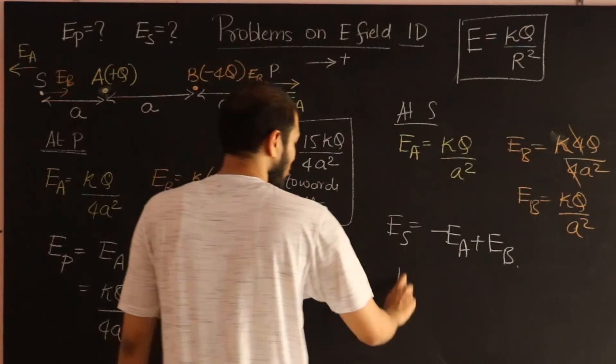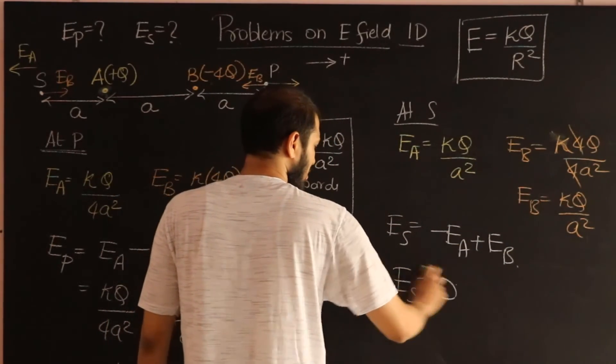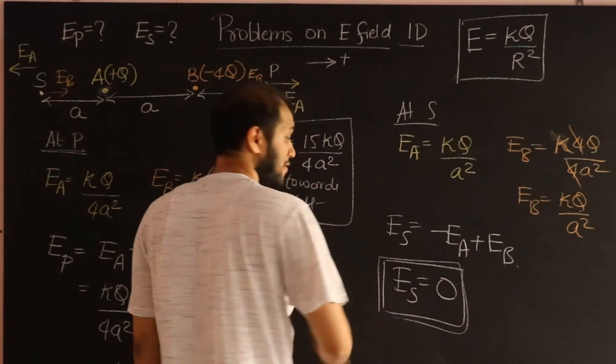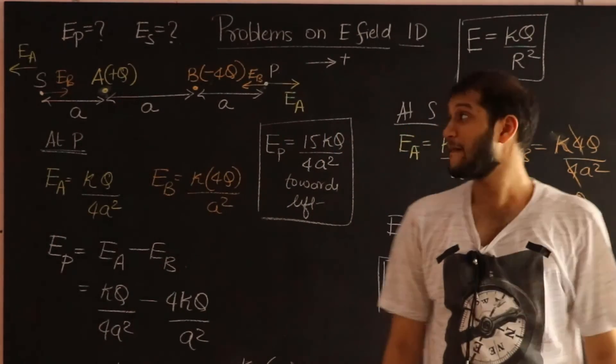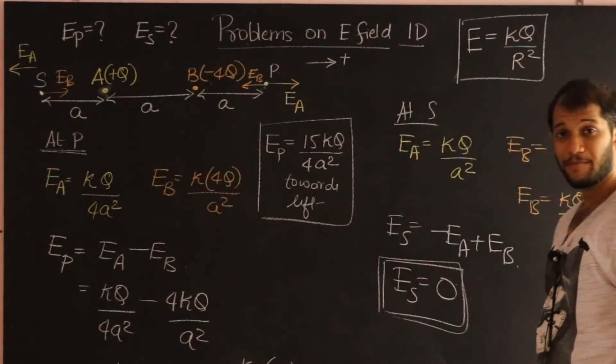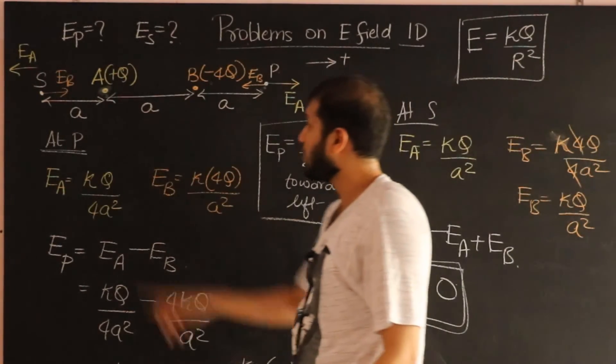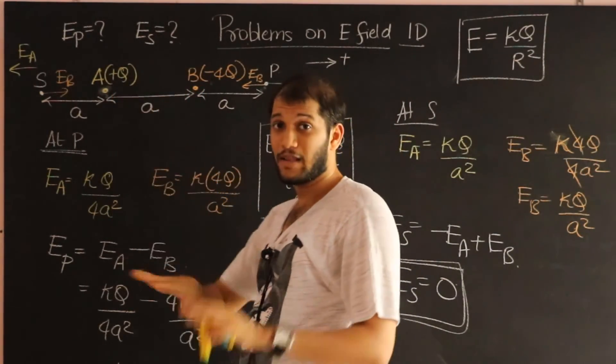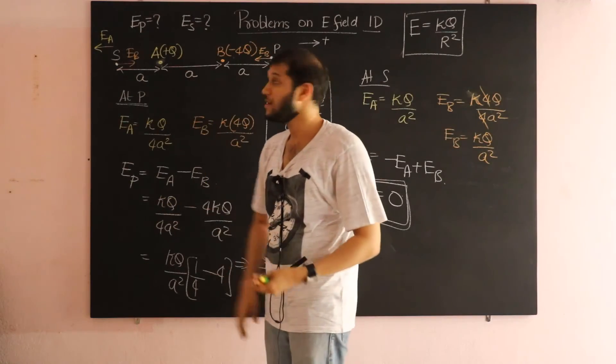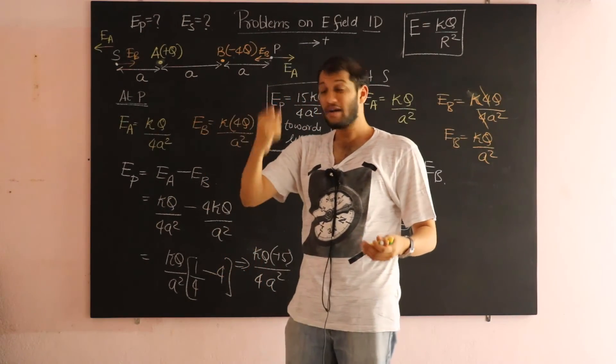And therefore, we get a wonderful result. Electric field at this point is 0. And that's beautiful, because what that tells me is that if I have these charges fixed, so they're not allowed to move due to their mutual repulsion, and if I take a tiny charge from my pocket, and I put it at that point S,